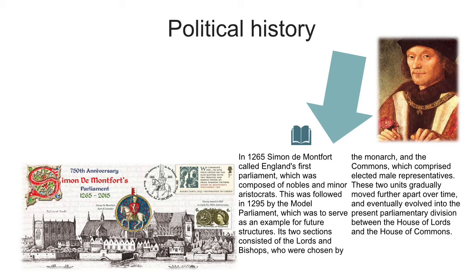These developments encouraged the establishment of basic parliamentary structures against royal power. In 1265, Simon de Montfort called England's first Parliament, which was composed of nobles and minor aristocrats. This was followed in 1295 by the Model Parliament, which was to serve as an example for future structures. It took sections consisting of the lords and bishops, who were chosen by the monarch, and the commons, which comprised elected male representatives. These two units gradually moved further apart over time and eventually evolved into the present parliamentary division between the House of Lords and the House of Commons.